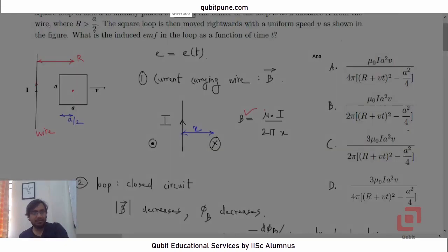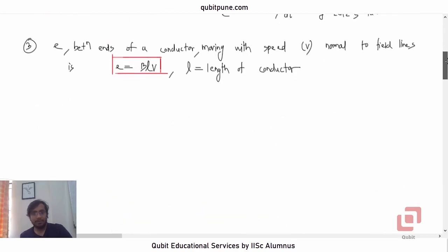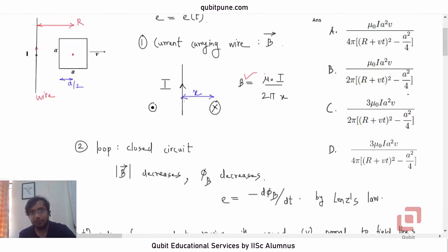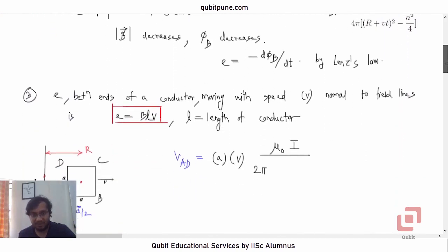So, let me redraw this figure. Let me redraw this figure here. Now, let us name the vertices of the loop. Let us call them ABCD. Let us first calculate the potential difference or the EMF induced between ends A and D, V_AD equal to. So, first of all, let us leave B here. Let us calculate L and V. L is A and V is the usual notation V. Now, what about B, magnetic field? So, it will be mu not I upon 2 pi into X, where X is the distance of the point from the current carrying conductor, which is creating the magnetic field.